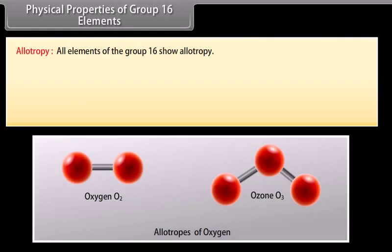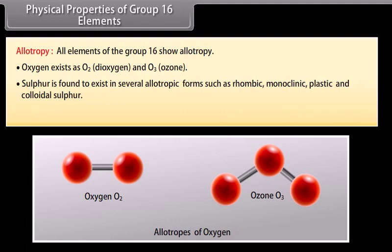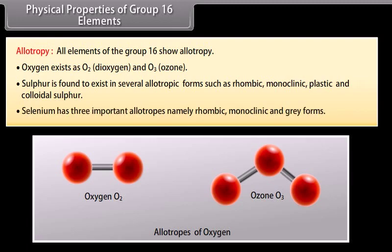Allotropy: All elements of group 16 show allotropy. Oxygen exists as O2 and O3. Sulfur is found to exist in several allotropic forms such as rhombic, monoclinic, plastic and colloidal sulfur. Selenium has three important allotropes namely rhombic, monoclinic and grey forms.